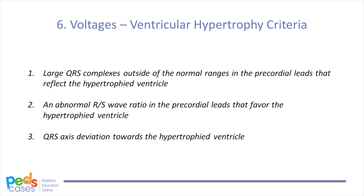Now moving on to the criteria for ventricular hypertrophy. Since a hypertrophied ventricle is larger and/or thicker than normal, the forces within that ventricle are amplified. This causes the following key ECG findings: 1. Large QRS complexes outside of the normal ranges in the precordial leads that reflect the hypertrophied ventricle. 2. An abnormal R-to-S wave ratio in the precordial leads that favor the hypertrophied ventricle. 3. QRS axis deviation towards the hypertrophied ventricle, mainly seen in right ventricular hypertrophy.